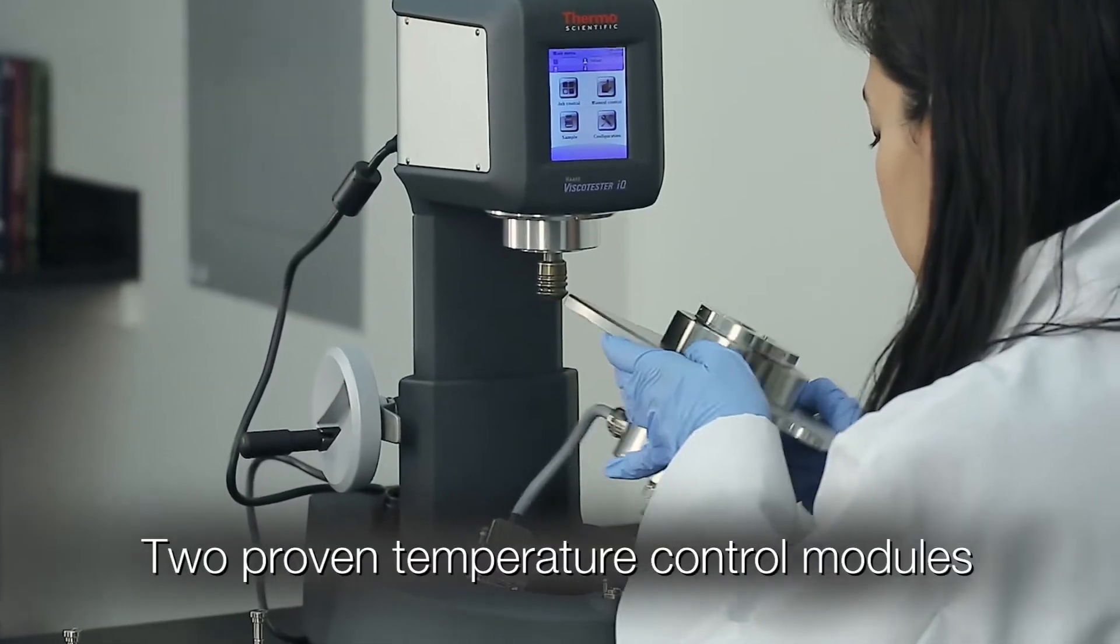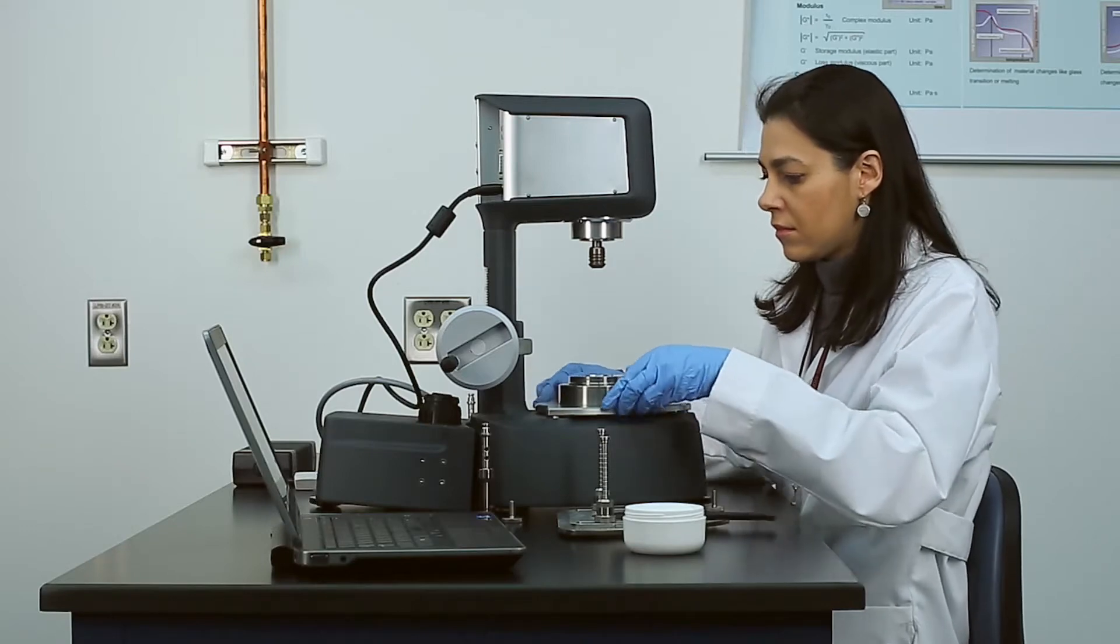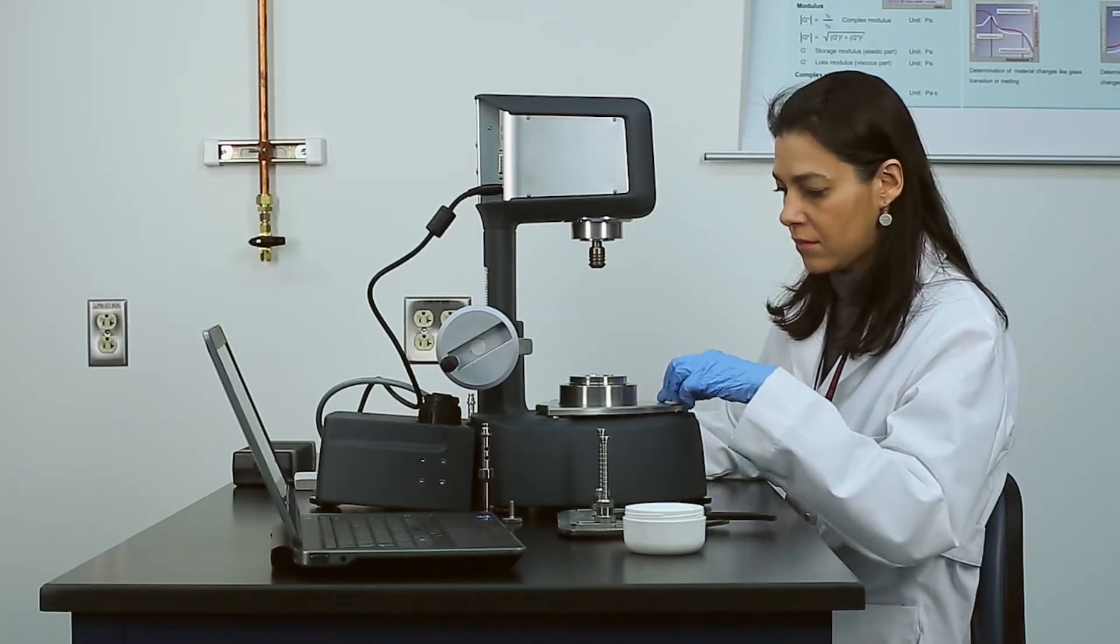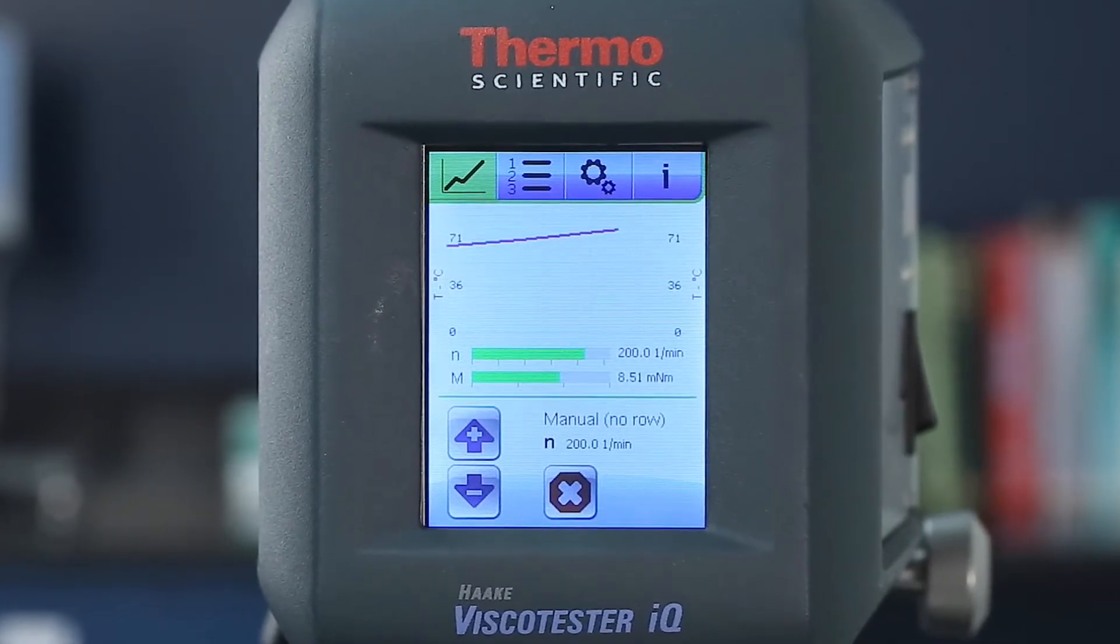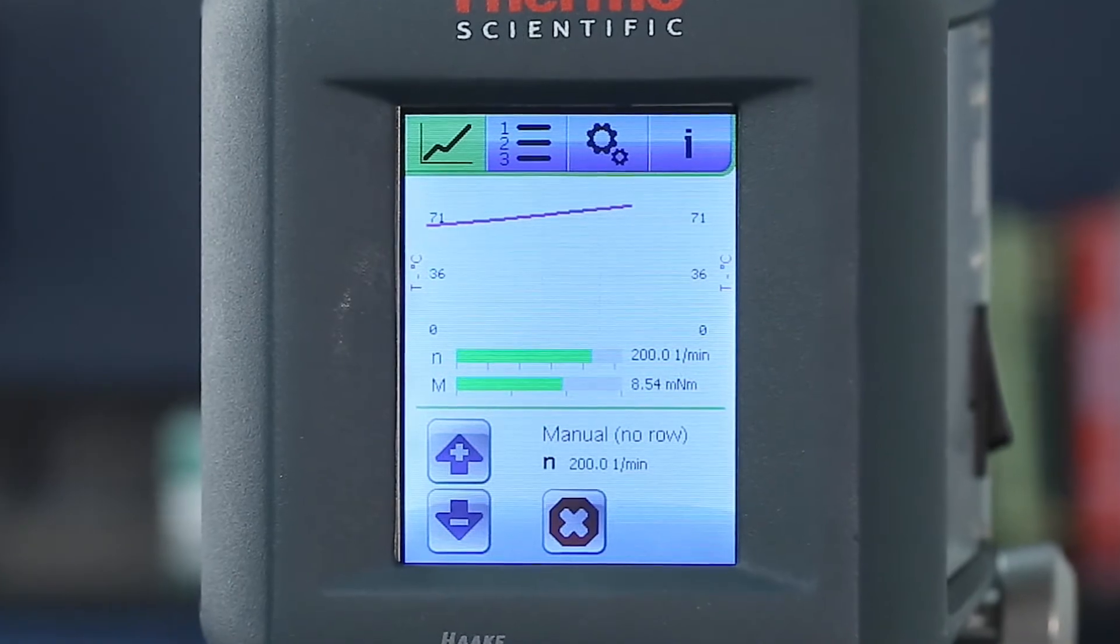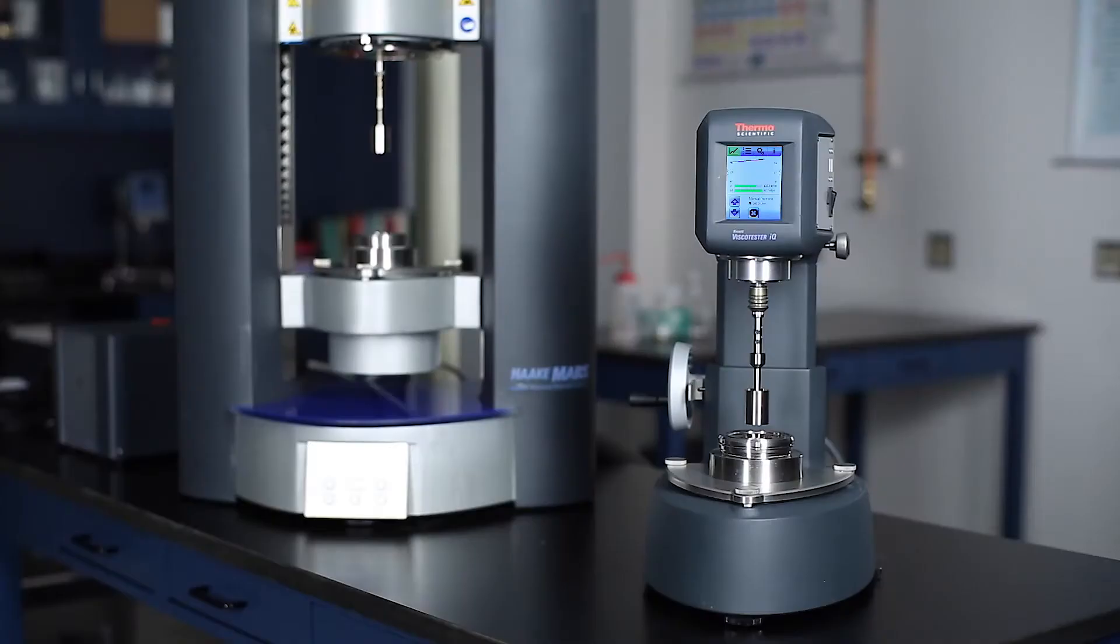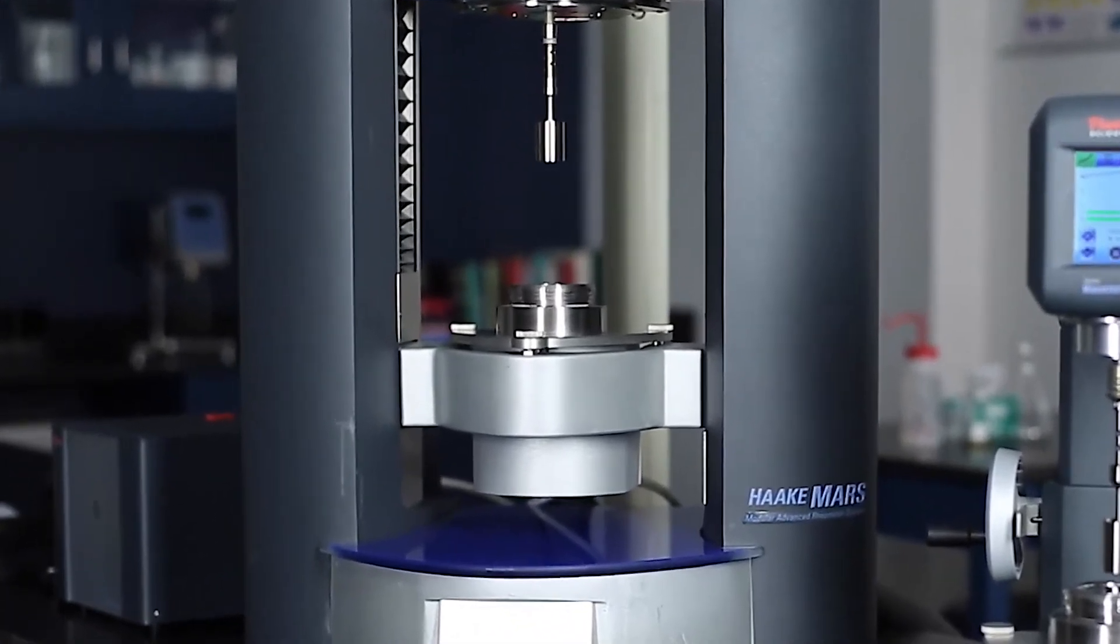Two modules are available for reliable temperature control, including a self-contained Peltier controlled unit. For maximum temperature range, the liquid controlled module spans minus 20 degrees Celsius up to 180 degrees Celsius. Both units are modeled after our successful high-end modular rheometer, the ThermoScientific Haake Mars 3.